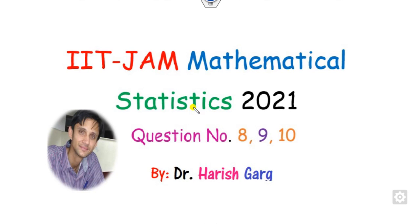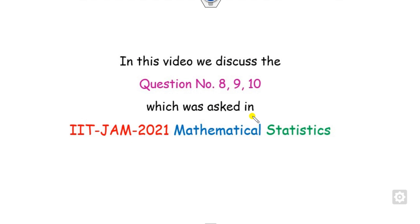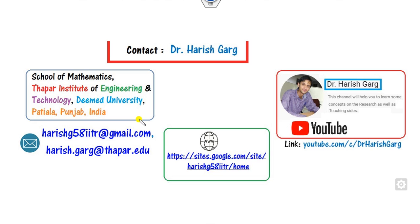Hello everyone, welcome to the next lecture on the answer key of IIT JAM Mathematical Statistics 2021. In this lecture we will see questions 8, 9, and 10 which were asked in this paper, and how you can solve them in a very quick manner. I am Dr. Gar, working in the School of Mathematics, Tapper Institute. You can simply follow this link for finding the various videos related to these courses.